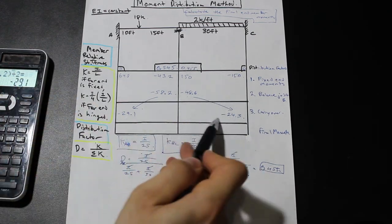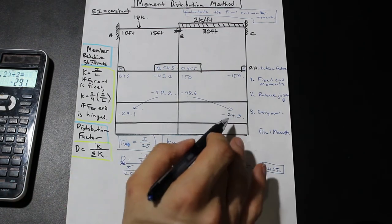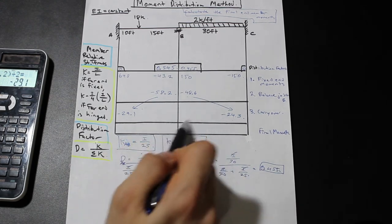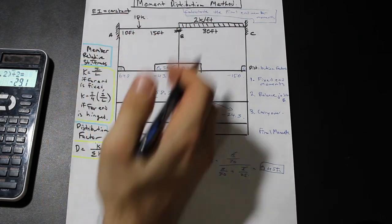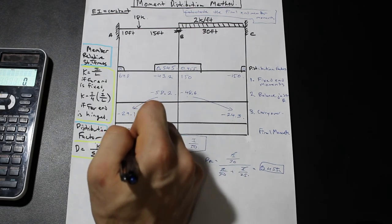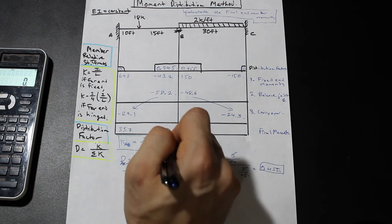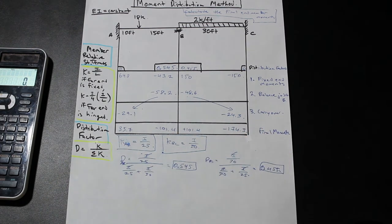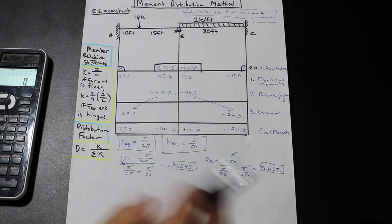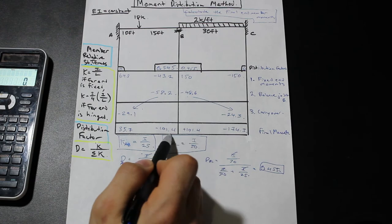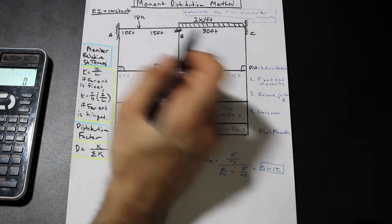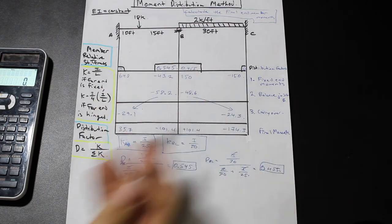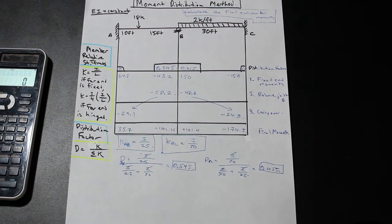Once there are no more values under the carryover joint B, we sum all of the columns to arrive at our final answer. So we get 64.8 minus 29.1, then 101.4, and negative 174.3 — all in kip-feet. These are our member end moments. A good check: at any roller support, the sum of the moments must equal zero. That's basic statics.